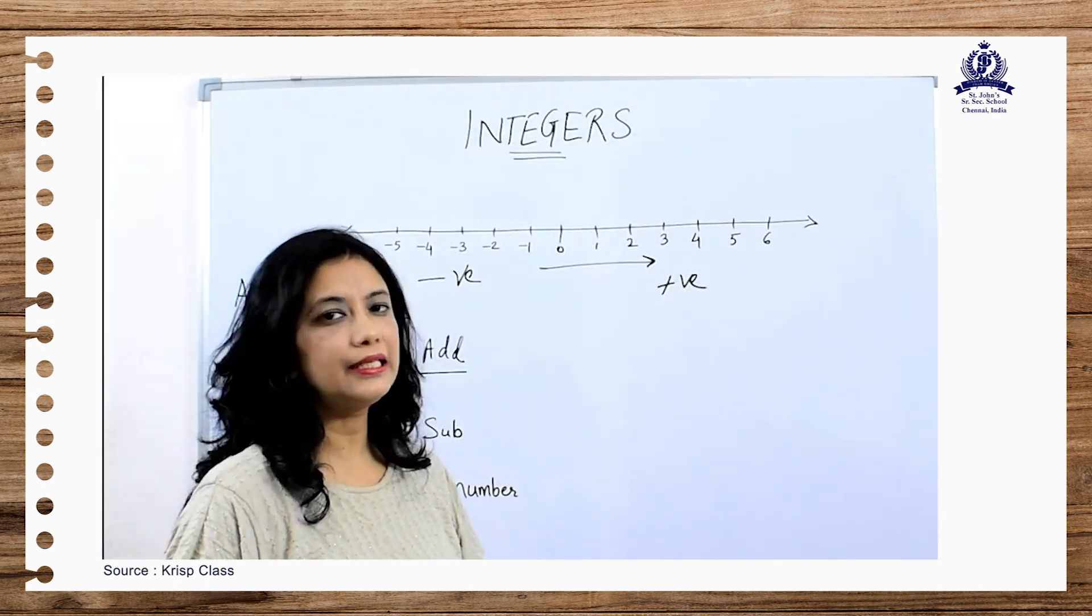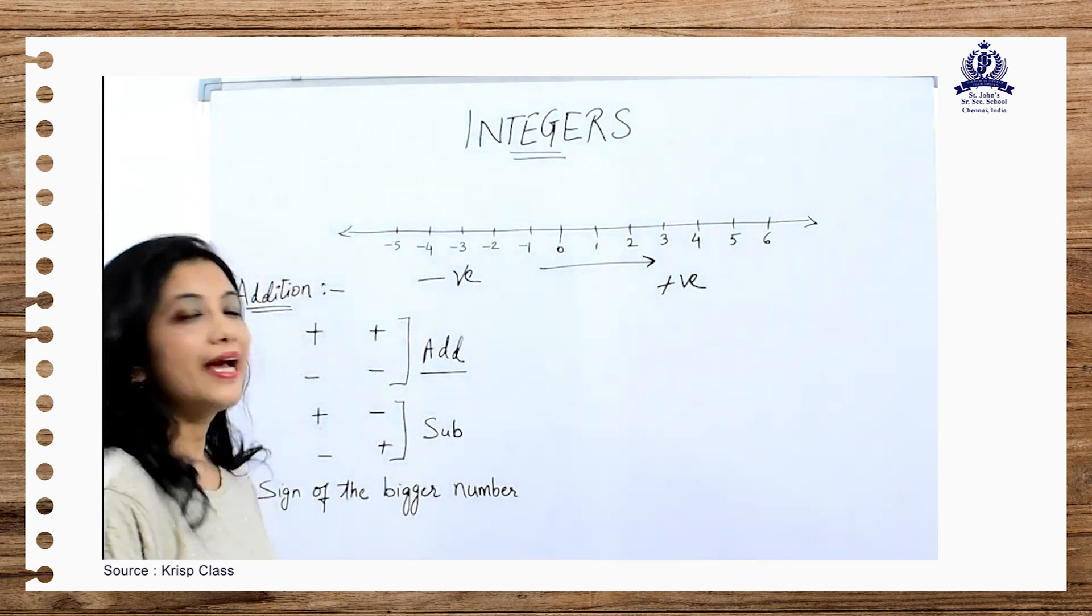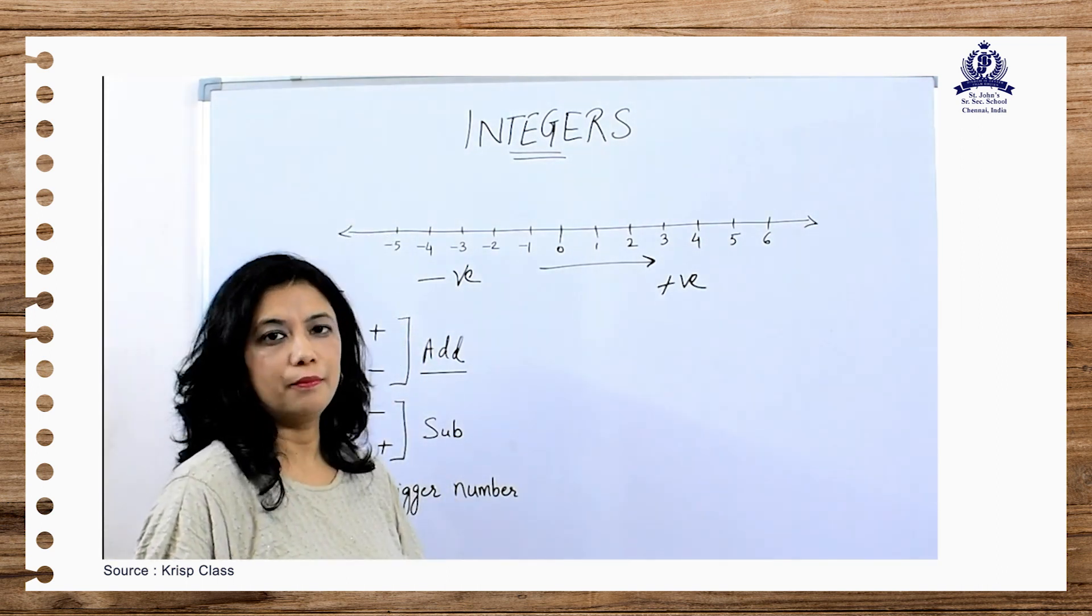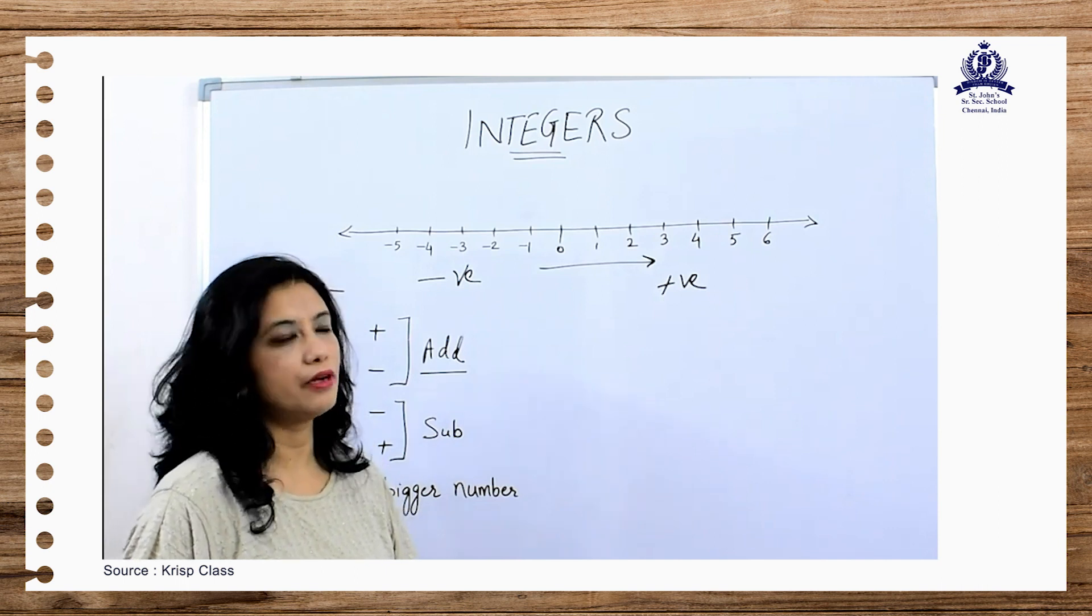Let us see how to do addition in integers. We know that in integers we have two types of numbers: positive numbers and negative numbers.